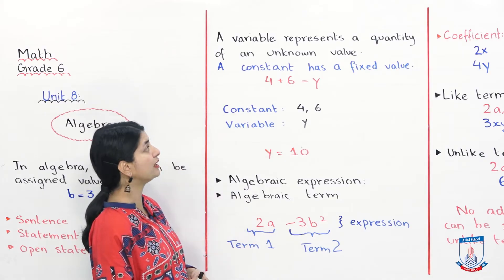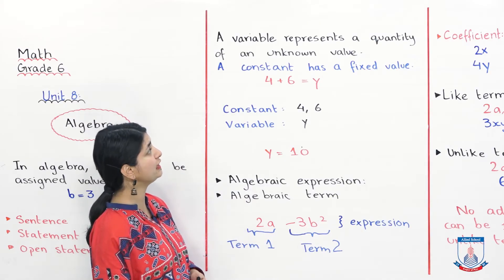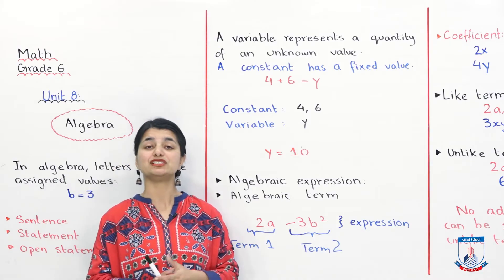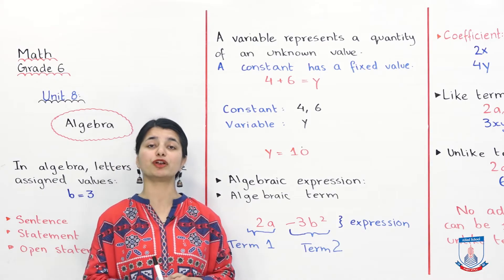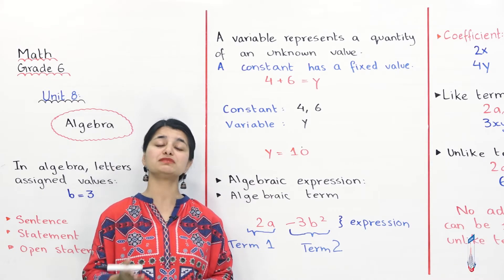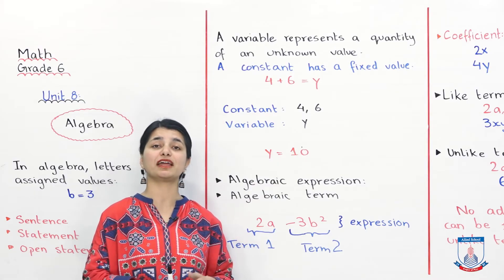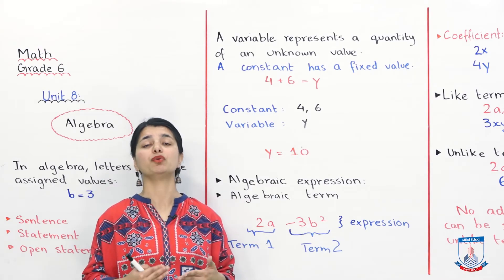A variable represents a quantity of an unknown value — something you don't know. It represents that unknown, and that value could be 12, it could be 4000, and so on.